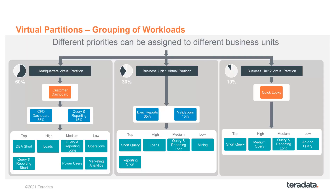And again, if one of the business units isn't using its allocation, that will flow immediately to the other virtual partitions proportional to their allocation percent. So you can get very granular in your priority assignments with the TASM workload management approach.